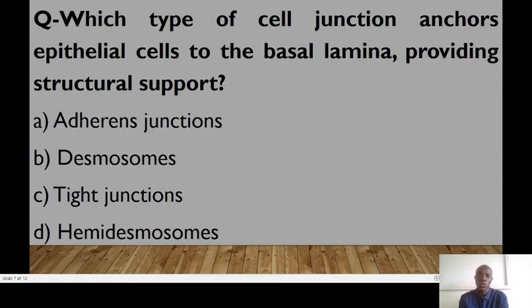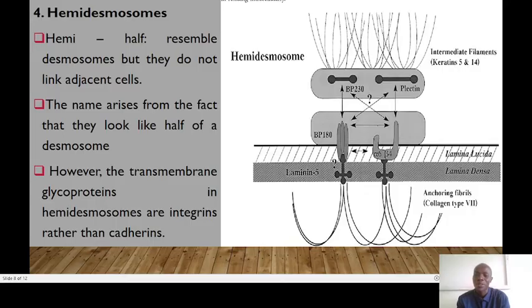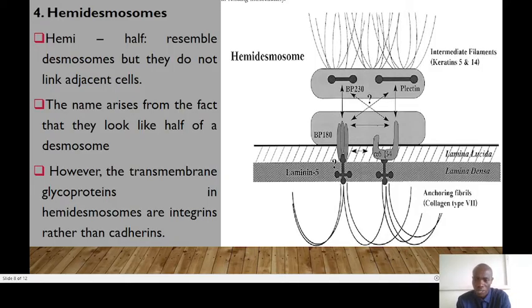Quiz: which type of cell junction will anchor the epidermal cells to the basal lamina, providing structural support? The correct answer is hemidesmosomes. These hemidesmosomes act as anchors that connect cells to the extracellular matrix. We have integrin proteins that link intermediate filaments to the basal lamina, providing structural support, particularly in epithelial cells like the skin.